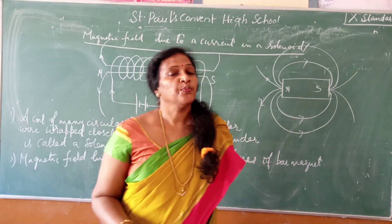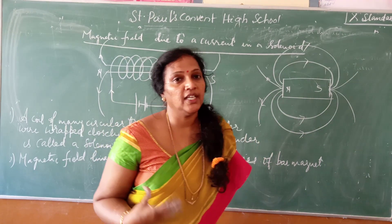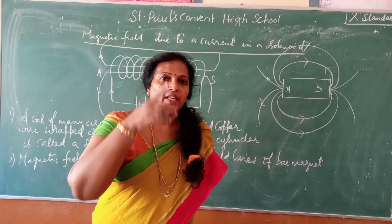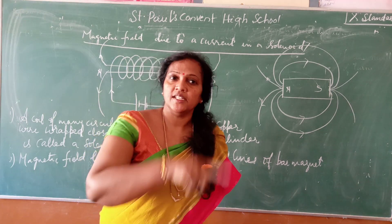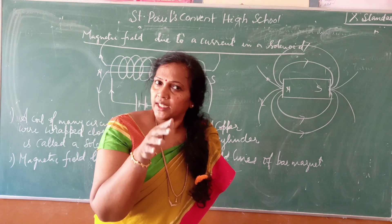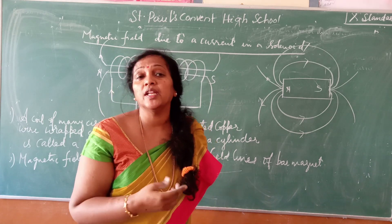Good morning children. We have seen the magnetic field lines around a current carrying straight conductor as well as the circular loop. Now let us see how it will be in a solenoid.